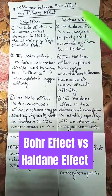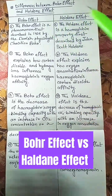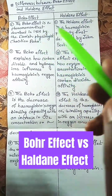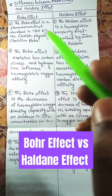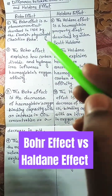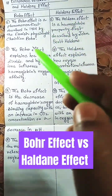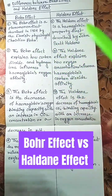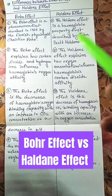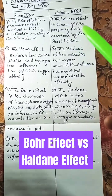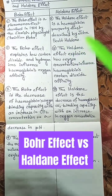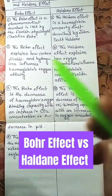Differences between the Bohr effect and the Haldane effect. The Bohr effect is a phenomenon first described in 1904 by Danish physiologist Christian Bohr. The Haldane effect is a hemoglobin property first described by John Scott Haldane.